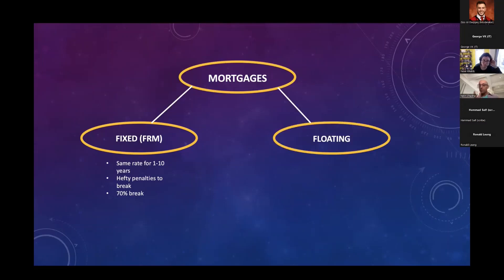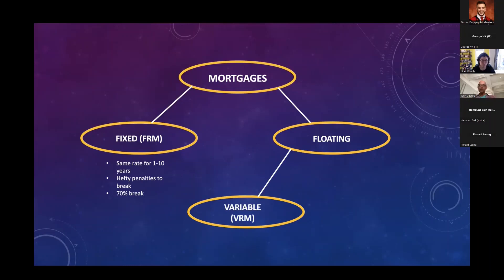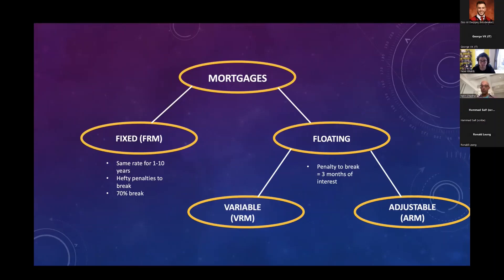Floating rate mortgages — there are two types. The first is the variable rate mortgage, and the second is the adjustable rate mortgage. With either type of floating rate mortgage, the penalty to break is usually much less harsh — typically three months of interest. Today, with interest rates being high, that penalty is getting higher, but as rates eventually come down, that penalty will decrease. We'll differentiate between the variable and adjustable rate mortgages in the upcoming slides.